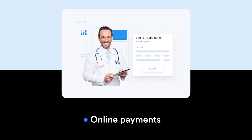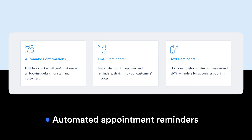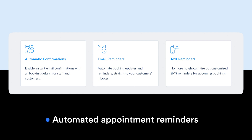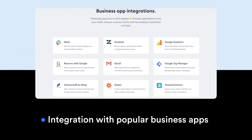Number five is Setmore, which is an intuitive appointment scheduling software designed to be user-friendly and customizable. It allows businesses to accept online payments from customers at the time of booking. It can also send automatic appointment reminders to customers via email and SMS, helping reduce no-shows and keep appointments on track. It also offers integration with apps like Google Calendar.